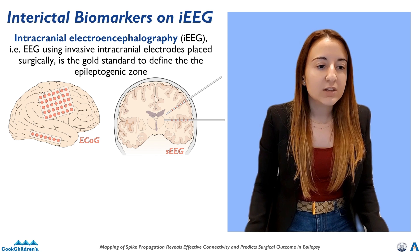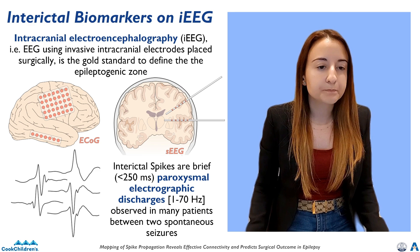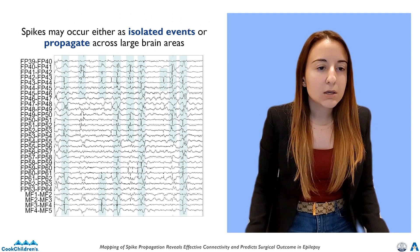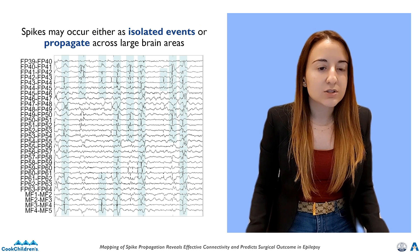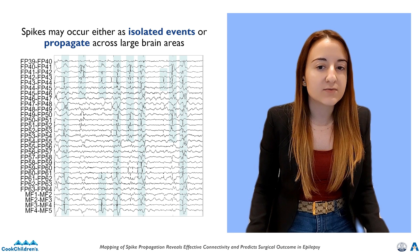While waiting for seizures, we can detect interictal spikes, a key epilepsy biomarker in intracranial recordings. Spikes may occur either as an isolated event or propagate across large brain areas. However, intracranial EEG only records activity from tissues surrounding the electrodes and may not sample key areas involved in this phenomenon.